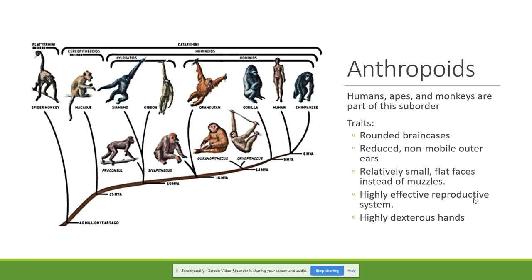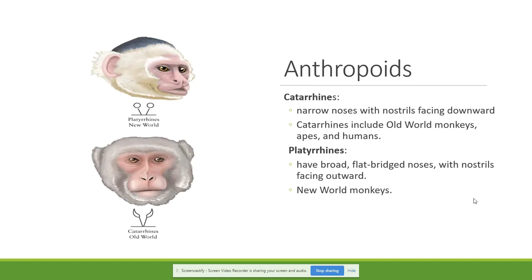Regarding the reproductive system, some anthropoids don't depend on a system of estrus like, for example, a dog — they have more of a monthly cycle. We're going to divide the anthropoids into two big categories: the catarrhines and the platyrrhines.